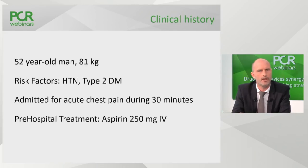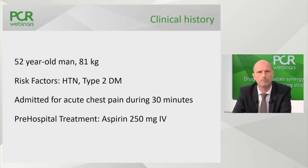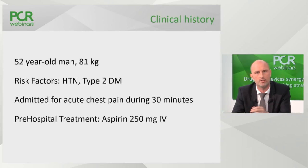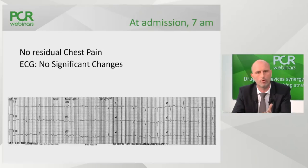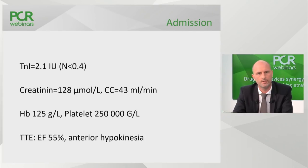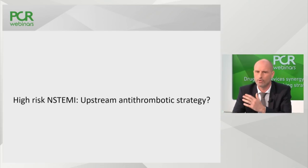This is a typical ACS patient — a young 52-year-old with hypertension and diabetes, coming to the hospital for acute chest pain, who had 250mg of aspirin as antiplatelet therapy before reaching the hospital. On arrival, he has no more pain, no significant ST changes on ECG, but a positive troponin, a slight degree of renal dysfunction, preserved LV systolic function with only anterior wall motion hypokinesia. So we have a real high-risk non-STEMI patient.